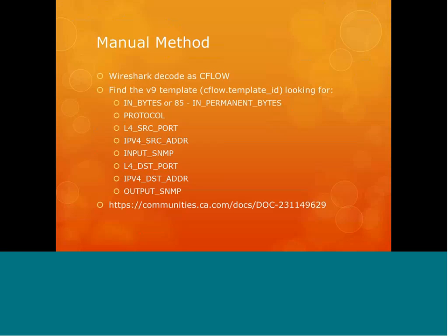There is a manual method. You can go in and use Wireshark to decode the packets and look for the necessary data. To break it down, there are essentially eight fields that are required to be inside a flow in order for the harvester to actually pull out useful data. If one or more of those fields is missing, then the flow that came in is pretty much useless. NFA doesn't have enough information to fill out all of the minimum tables required to store data for that flow.